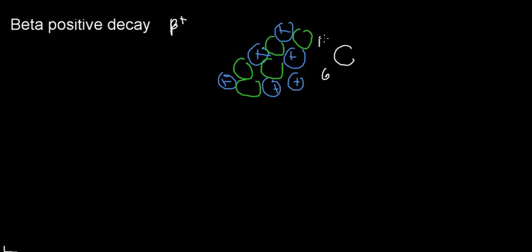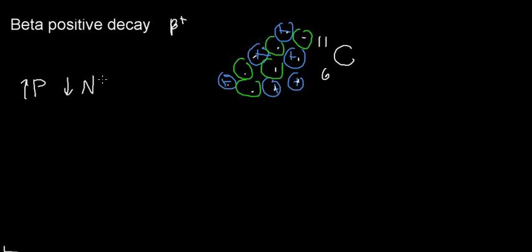Carbon-11 has too many protons and too few neutrons. This is essentially what is going on here. What if we could turn one proton into one neutron?